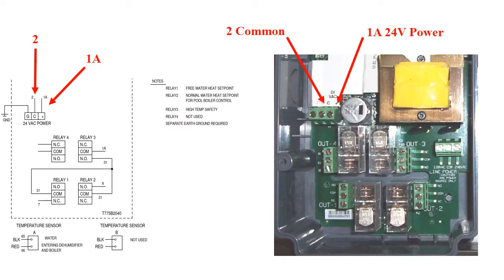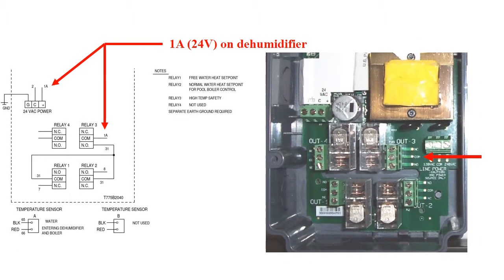An earth ground is required on the third terminal of the power strip. The COM terminal on output or relay 3 is not wired to the common terminal on the power strip.